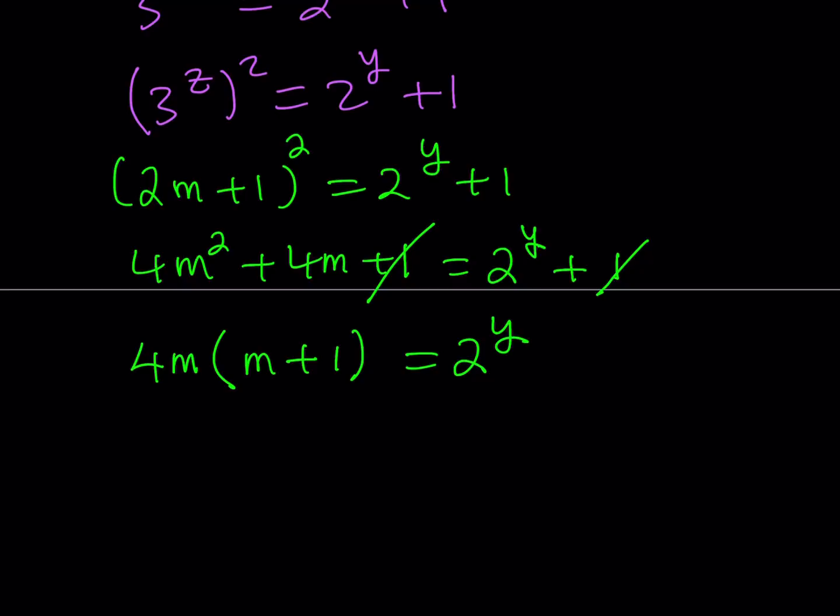One thing to notice about this expression is very important. We have a 4 which is a power of 2, but we also have the product of two consecutive integers. So m times m plus 1. Think about something like 2 times 3, 3 times 4, 4 times 5. If you multiply two consecutive integers, first of all they're not going to have any common factors besides 1. Second, their product will never be a power of 2. So when you multiply by 4, it's just not going to work, which means that this is a contradiction.